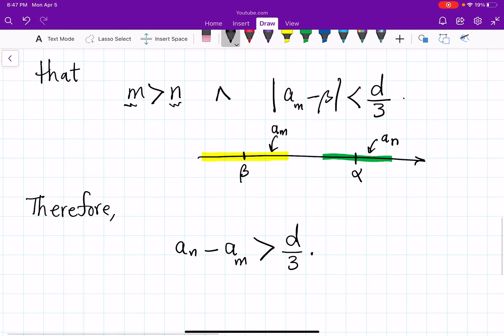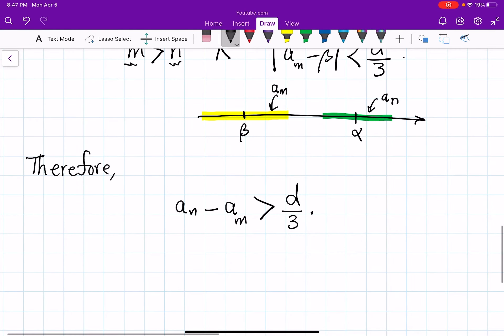such that aₙ minus aₘ is bigger than d over 3 but this is a contradiction. But this is a contradiction if we take epsilon to be d over 3 then we are in trouble because for d over 3 for this epsilon no matter how hard you try